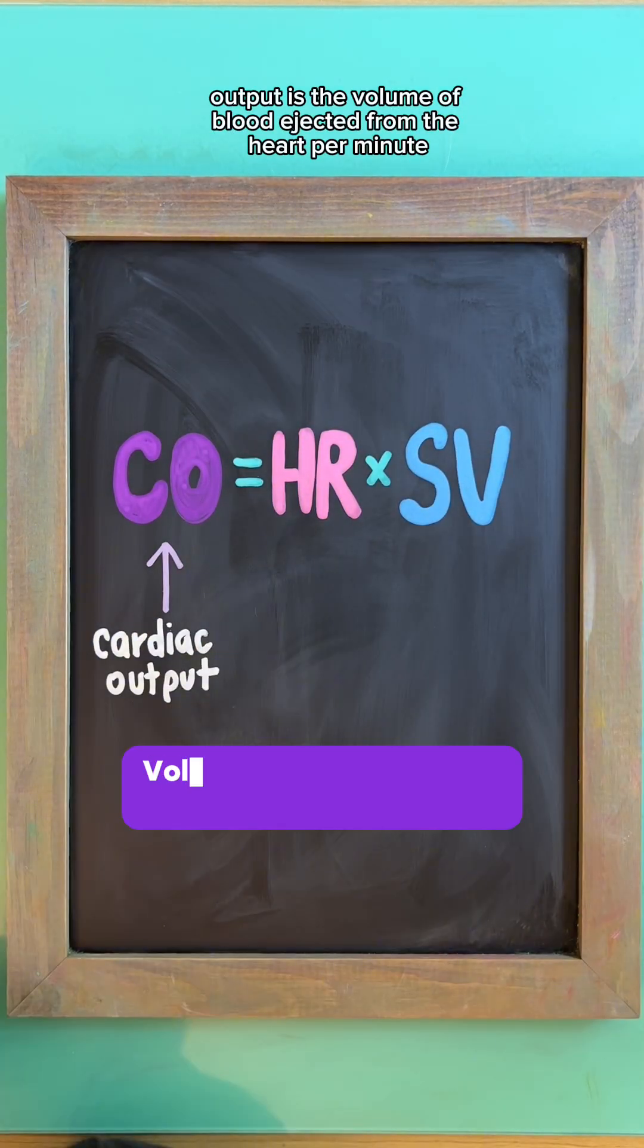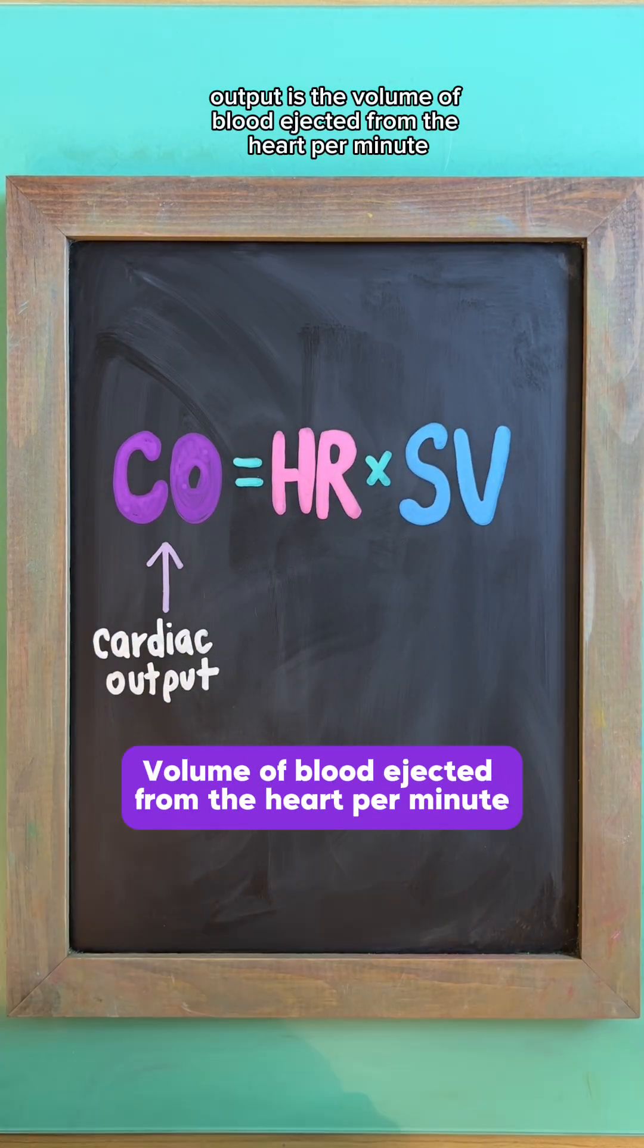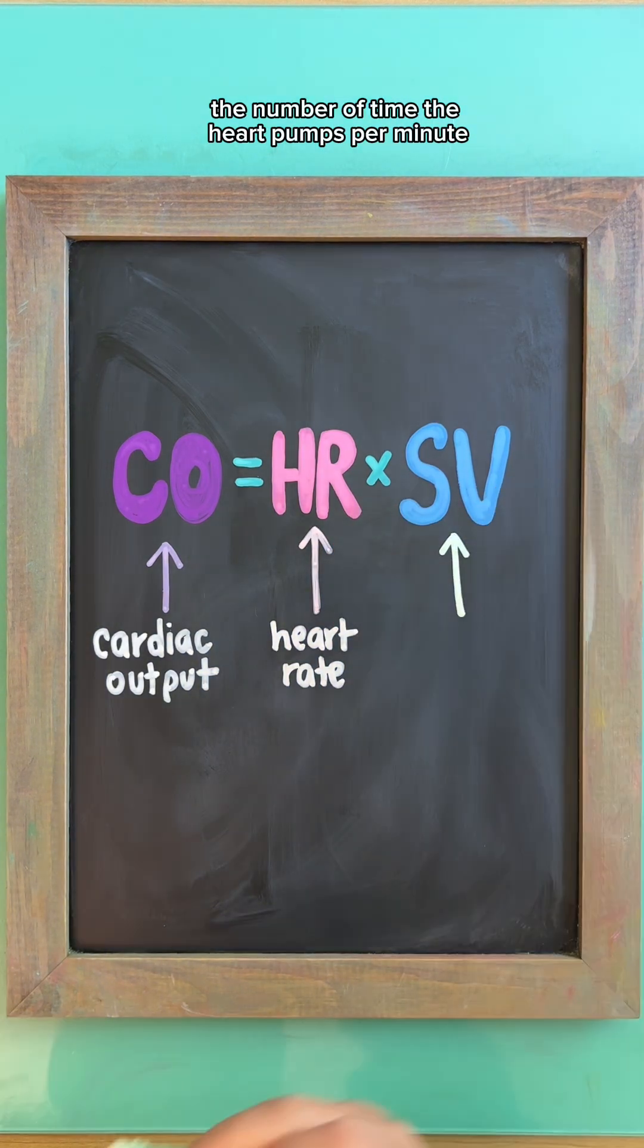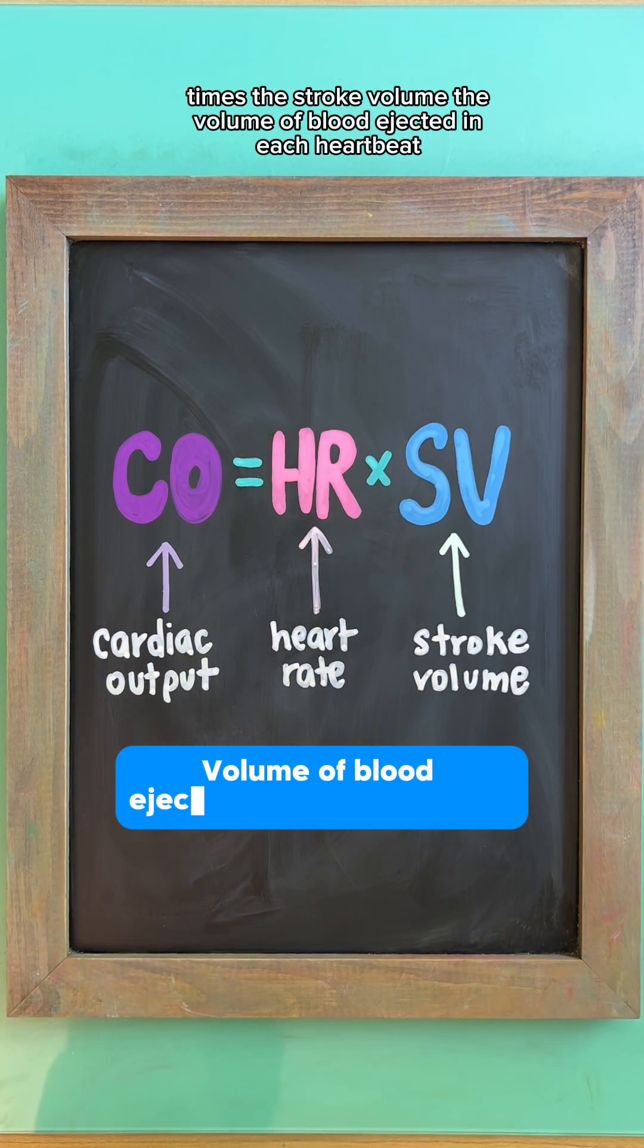Cardiac output is the volume of blood ejected from the heart per minute, and you can get this number by multiplying the heart rate, the number of times the heart pumps per minute, times the stroke volume, the volume of blood ejected in each heartbeat.